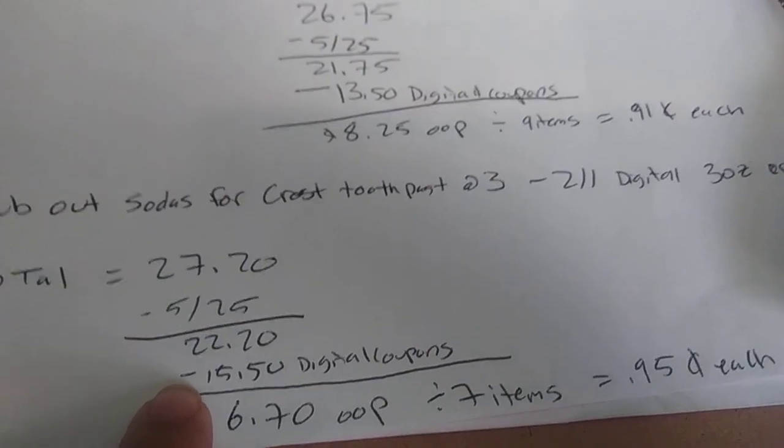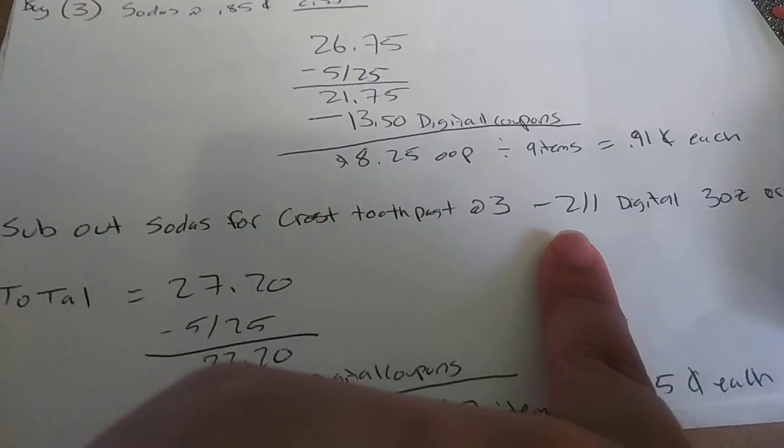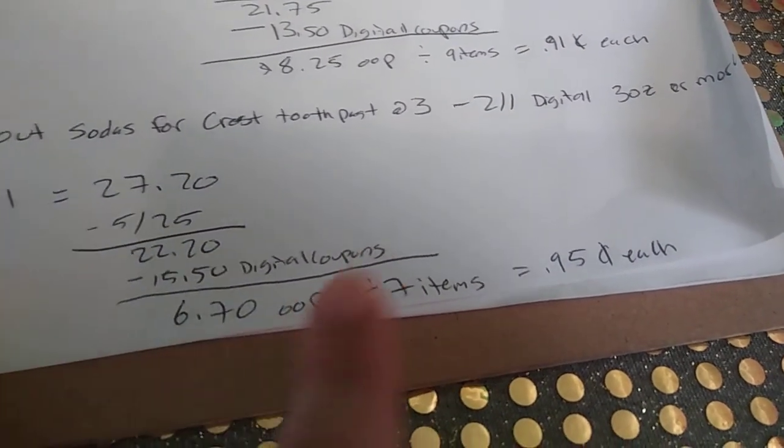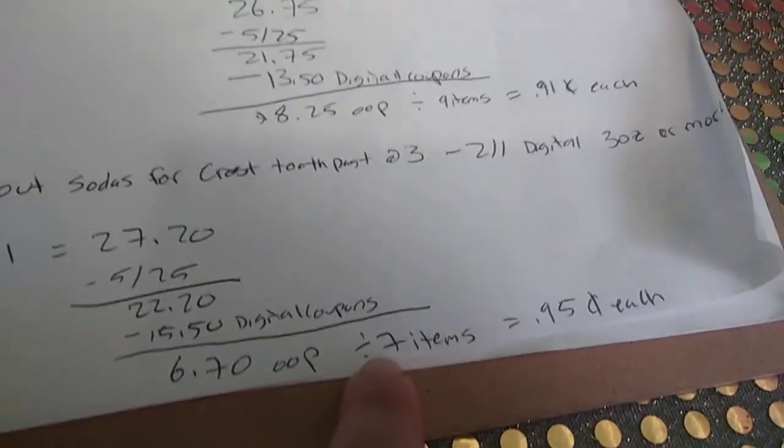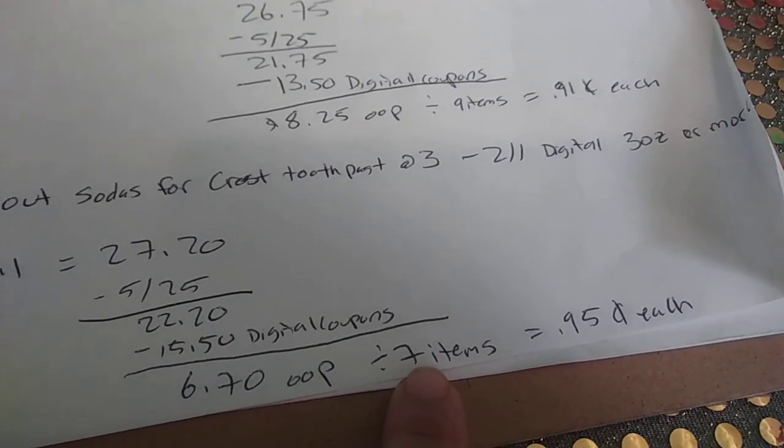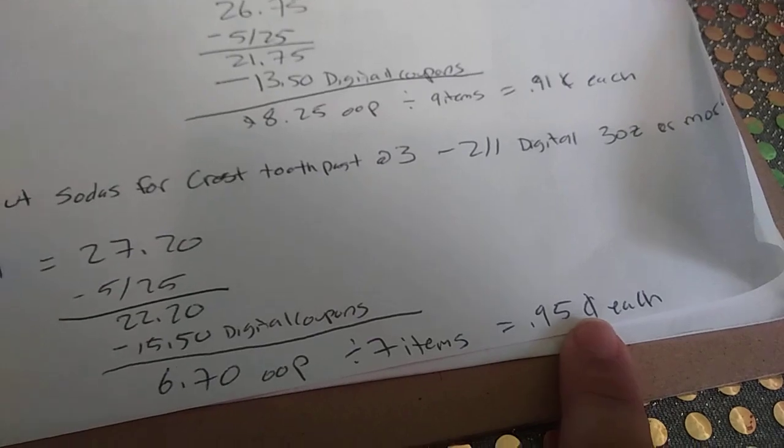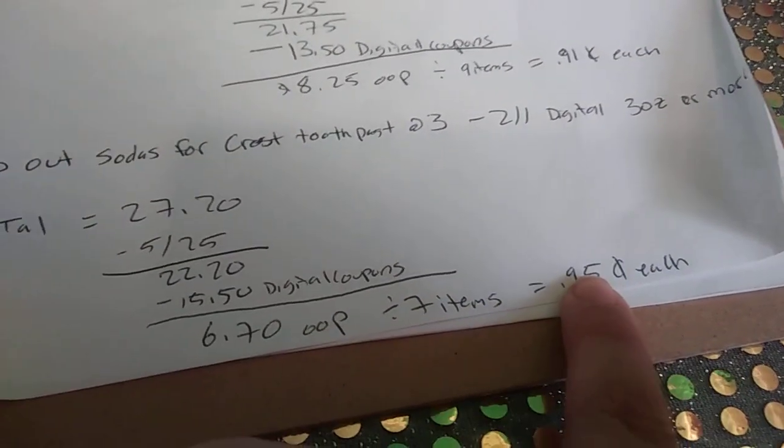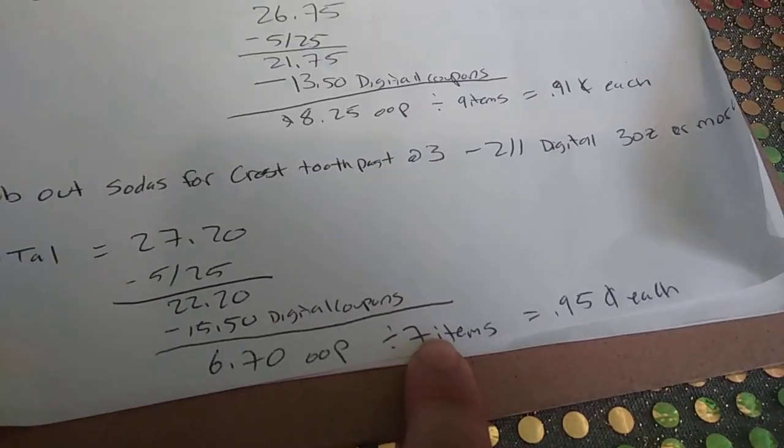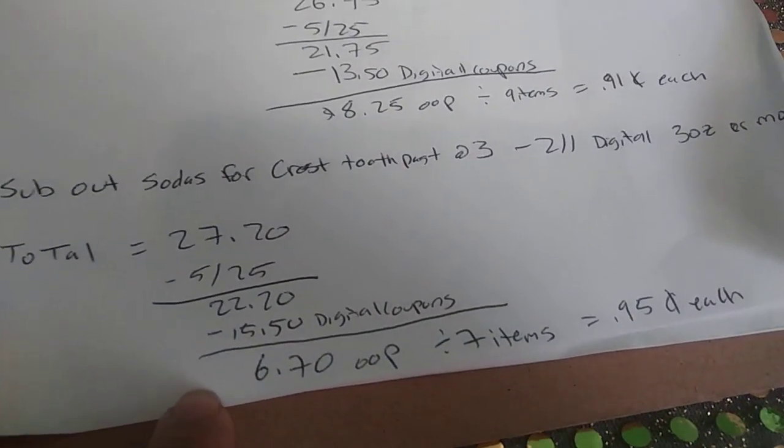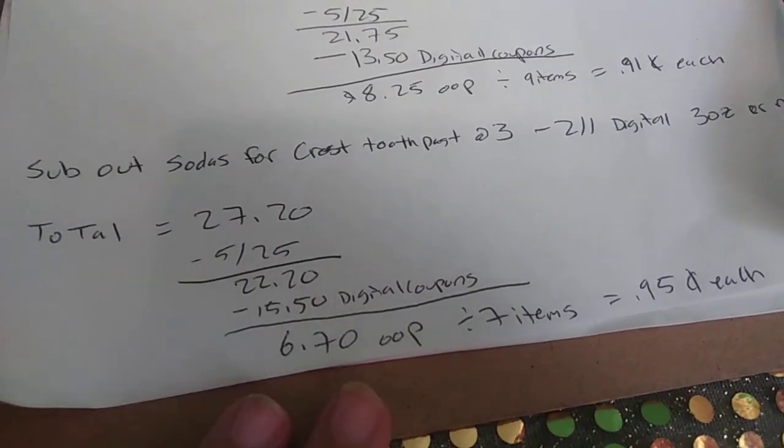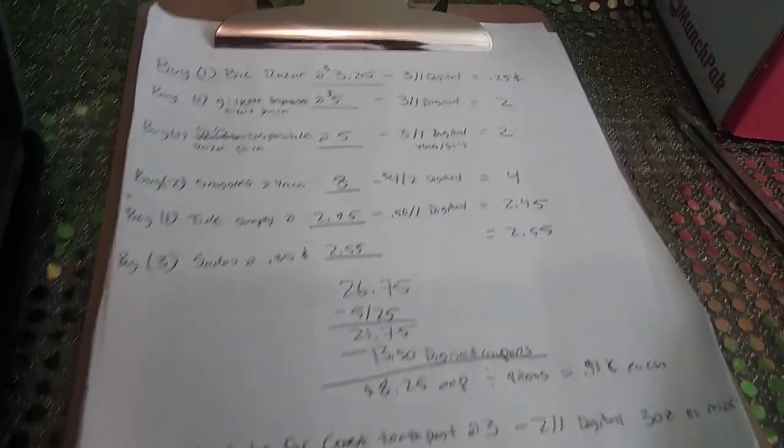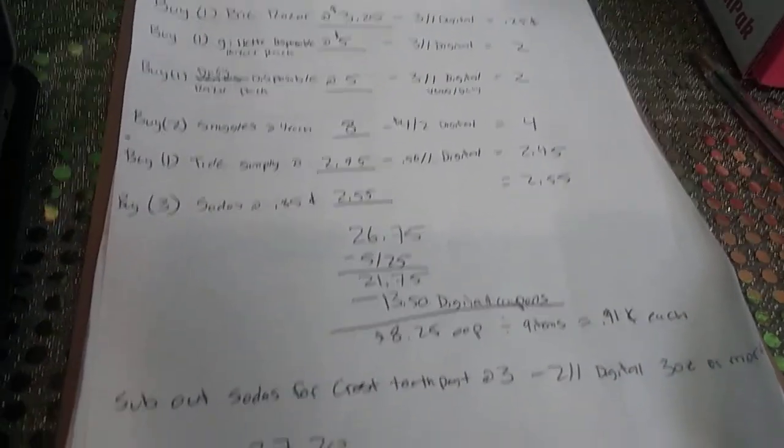So it's $15.50 in coupons now. See it was $13.50, but now you have two extra dollars in coupons. So $15.50, making it $6.70 out of pocket for seven items now because you're only getting one toothpaste instead of three sodas. So it's seven items, so 95 cents each. So it makes everything a few cents more and you're getting a few less items, but it does make your out of pocket a little bit less. So if you would like your out of pocket to be as least as you can get it, this would be one way to do it. Hope that wasn't too confusing.